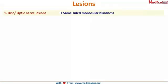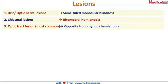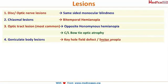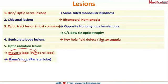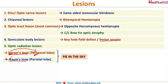To summarize: optic nerve lesions cause same-sided monocular blindness; chiasmal lesions cause bitemporal hemianopia; optic tract lesion causes contralateral homonymous hemianopia with contralateral bowtie optic atrophy; lateral geniculate body causes keyhole field defect or sector anopia; optic radiation — Meyer's loop in the temporal lobe and Baum's loop in the parietal lobe — causes pie in the sky lesion; and occipital lobe lesion causes macular sparing.